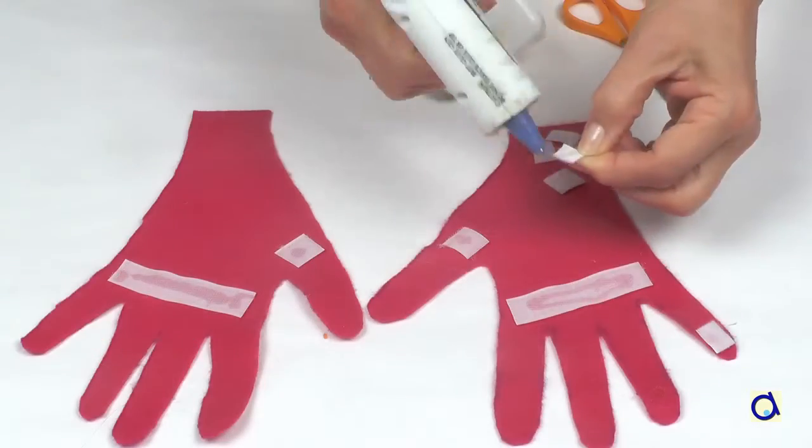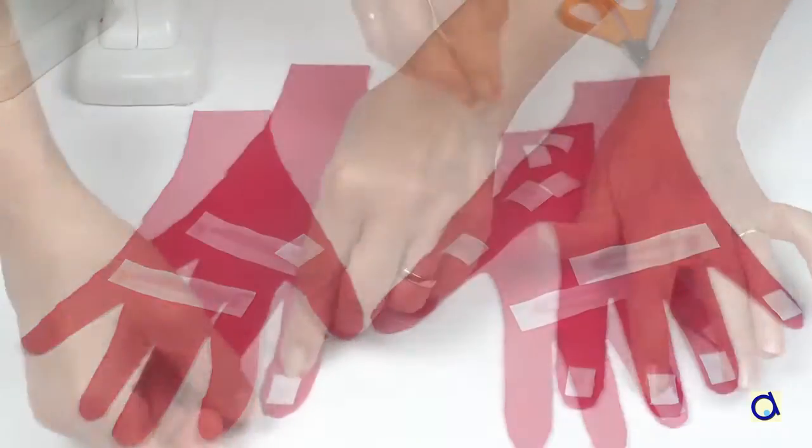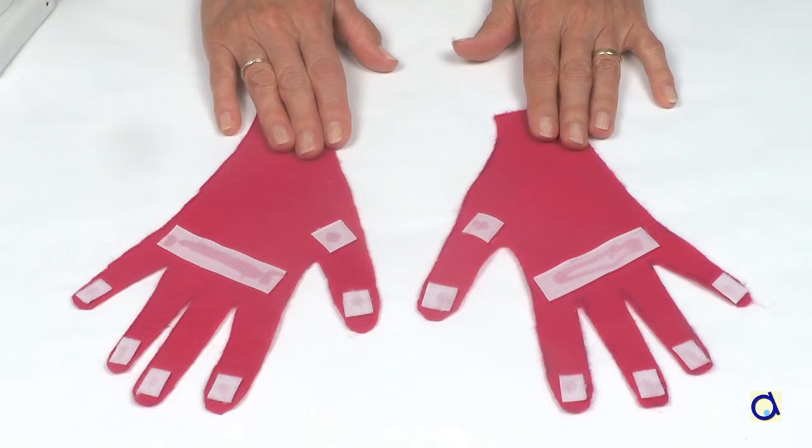Take the other side of the velcro, cut out small pieces and glue them to the top of the fingers. Proceed the same way for the other hand. Your felt hands are ready to count.